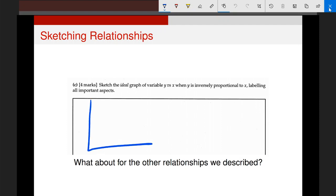So it's asking you to sketch a relationship. This is very similar to some of the ones I gave you previously. Sketch an ideal graph of variable y versus x. So here is x, here is y. When y is inversely proportional to x, labeling all important aspects. In this case, as we did previously, if y is inversely proportional to x, the bigger x is, the smaller y is. And just from doing this a number of times, I know that the relationship is going to be like that.